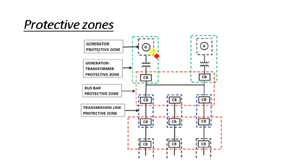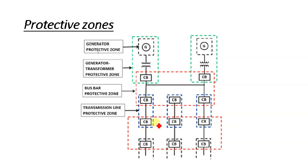This is the basic diagram of a protection zone. Here you can see we have a generator, a step-up transformer, then a bus bar, and then a transmission line. You can see the circuit breakers. This is known as the generator protective zone. The second is the generator-transformer protective zone, shown by the green dotted line. The third is the bus bar protective zone, and the transmission line protective zone is shown in the blue line. Three parallel transmission lines are going out, and you can see circuit breakers at each end along with the protective zones.